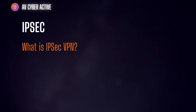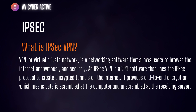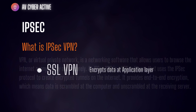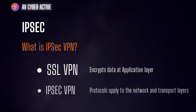Moving on to IPsec VPNs. A VPN, or virtual private network, is a networking feature that allows users to browse the internet anonymously and securely. IPsec works with two VPN types: SSL VPN and IPsec VPN. The main difference is that SSL VPN encrypts data at the application layer, so you can download an IPsec client from your browser to set up a tunnel. However, IPsec VPN applies encryption at both the network and transport layers.